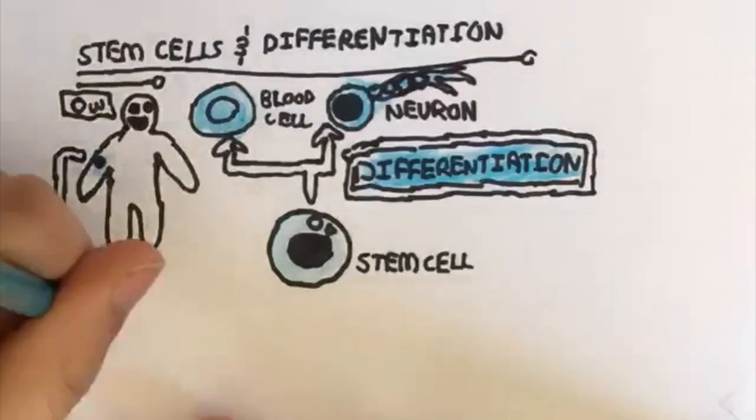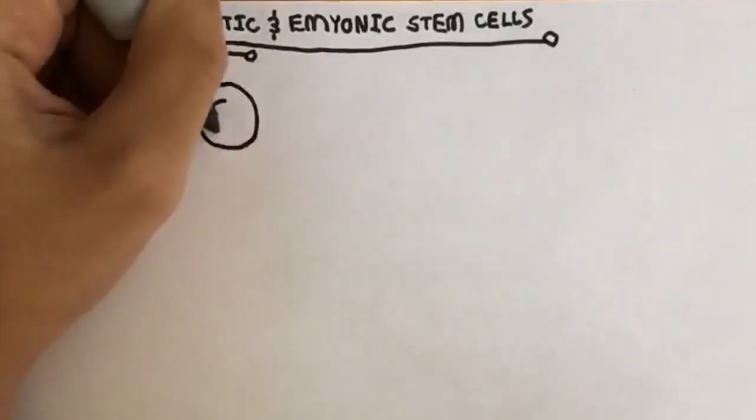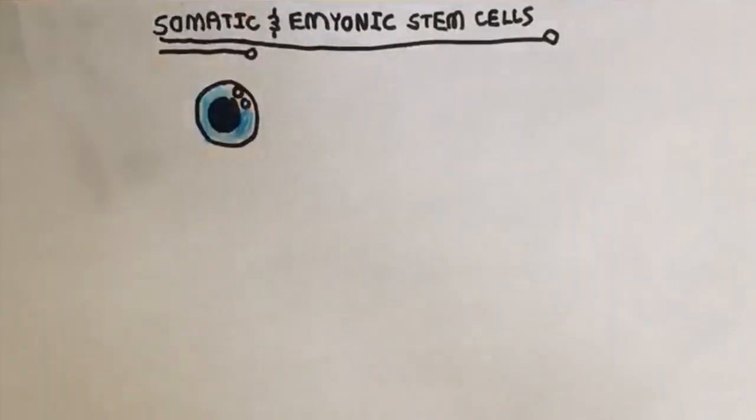For example, if you have a wound, stem cells will become skin cells so that you can heal faster and not have a hole in your skin for the rest of your life. A cell like this would be somatic, which is an adult stem cell used for repairing tissue.